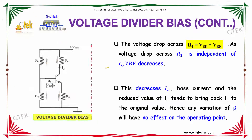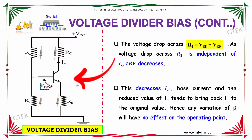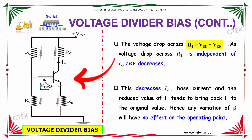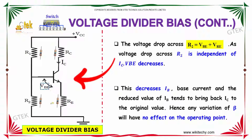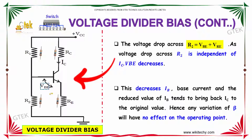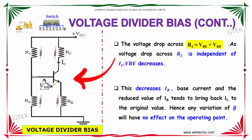The voltage drop across R2 is equal to the sum of the base-emitter voltage VBE and the voltage across RE. Since the voltage across R2 is independent of IC, VBE decreases. This decrease reduces the base current IB, and the reduced value of IB tends to bring IC back to its original value.